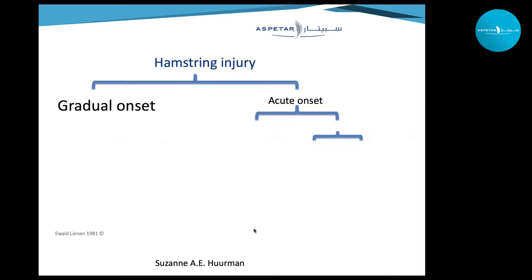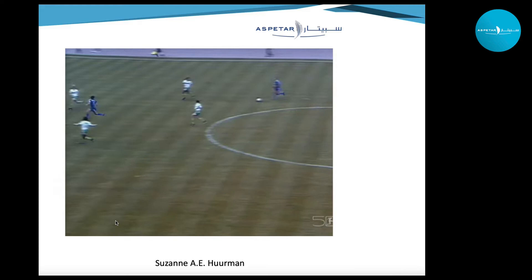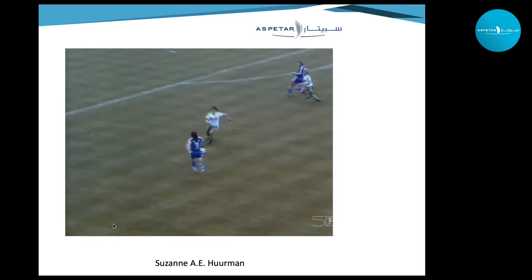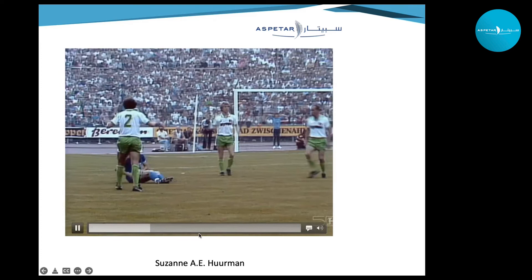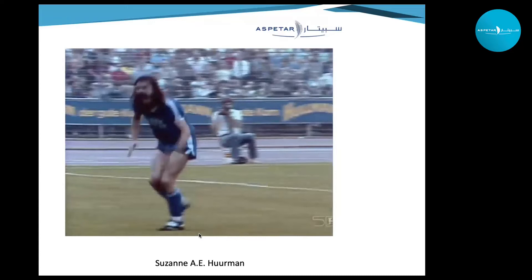For hamstring injuries we distinguish between gradual and acute onset. Gradual onset is most often delayed onset muscle soreness or overuse. We also have direct and indirect traumas. There is a historic example from 1981 — match day two of the 1981–82 season, Werder Bremen versus Arminia Bielefeld — where Ewald Lienen sustained a severe direct laceration due to a stud, with a 10-inch wound on his thigh and the bone exposed.